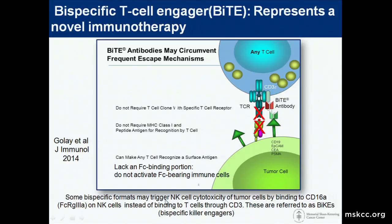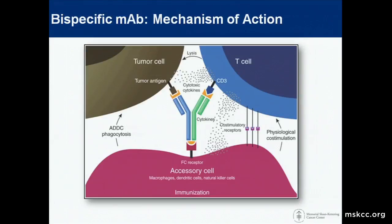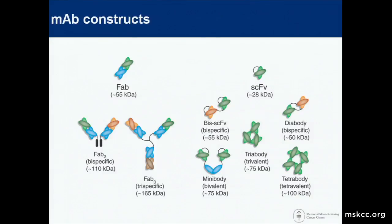Depending on what we target, the names change. BiTEs engage T-cells; there are also constructs that engage NK cells, binding to CD16A. The mechanism of action here is shown with a bispecific or trispecific engaging a T-cell, a tumor cell, and also retaining FC receptor activation, where you can get T-cell mediated lysis of the tumor cells, and those co-stimulatory receptors can be engaged potentially just through the physical connection.